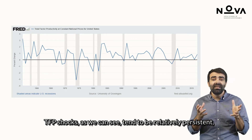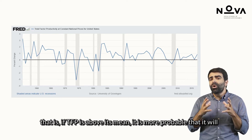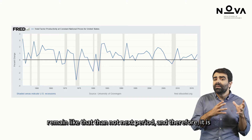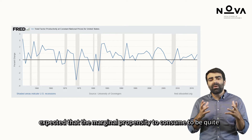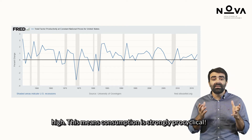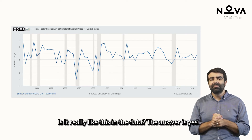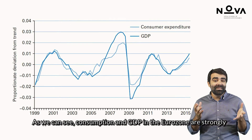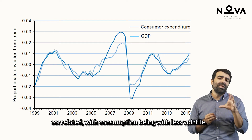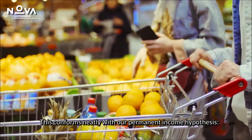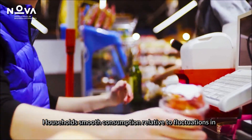The more persistent the shock in TFP, the stronger the income effect relative to the substitution effect. TFP shocks, as we can see, tend to be relatively persistent — if TFP is above its mean, it is more probable that it will remain so next period — and therefore the marginal propensity to consume is expected to be quite high. This means consumption is strongly pro-cyclical. Indeed, consumption and GDP in the Eurozone are strongly correlated, with consumption being a bit less volatile. This conforms neatly with the permanent income hypothesis: households smooth consumption relative to fluctuations in income.